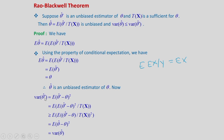For variance: Var(theta_hat') = E[(theta_hat' - theta)^2] = E[E((theta_hat' - theta)^2 | T(X))]. By Jensen's inequality, the mean square is greater than or equal to the square of the mean. Since E(theta_hat' | T(X)) = theta_hat and E(theta | T(X)) = theta, this gives Var(theta_hat') ≥ E[(theta_hat - theta)^2] = Var(theta_hat). Therefore Var(theta_hat) ≤ Var(theta_hat').